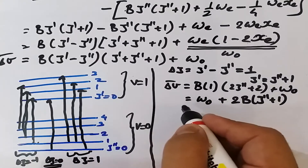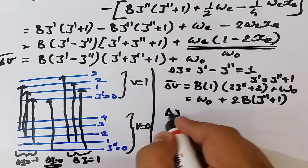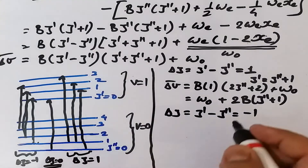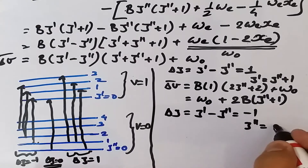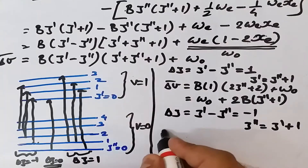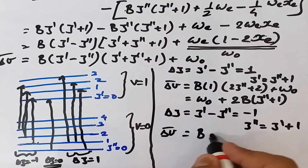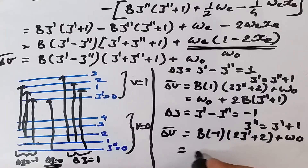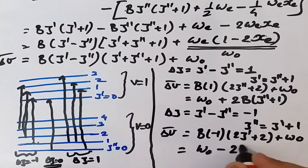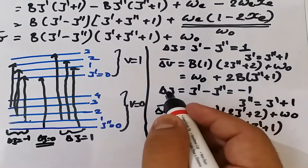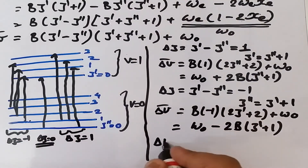When ΔJ = J' − J'' = −1, we write J'' = J' + 1. Substituting gives Δν̄ = B(−1)(2J' + 2) + ω₀ = ω₀ − 2B(J' + 1). This is the expression for the P branch, where ΔJ = −1. Both relations can be generalized as Δν̄ = ω₀ + 2Bm.